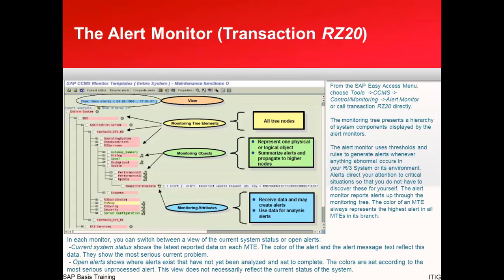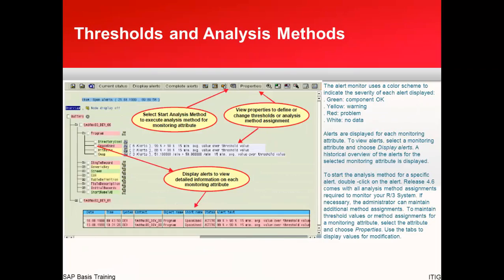The monitoring object summarizes MTEs and propagates alerts to higher nodes. Monitoring attributes — for example, for CPU or disk space — define what you want to monitor. For instance, I want to see an alert when disk is 98% full. So 98% full is one of the monitoring attributes. That covers the alert monitor. Next is thresholds and analysis methods.